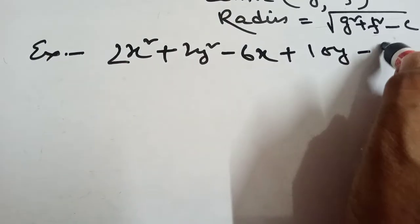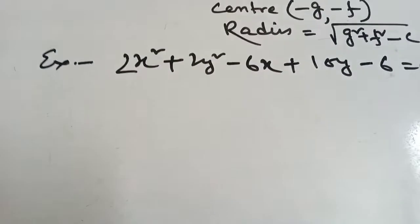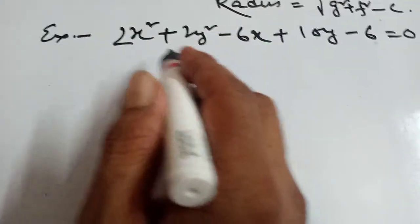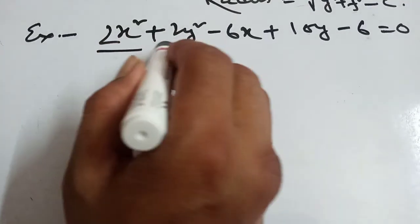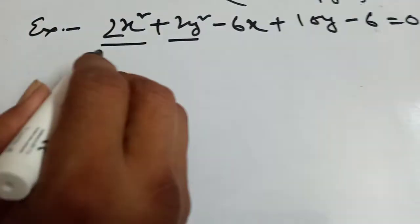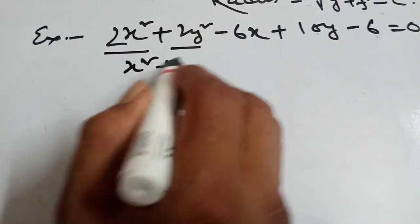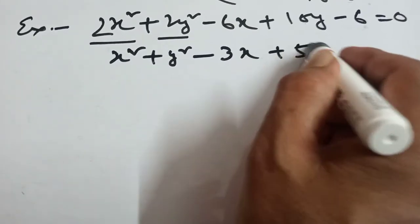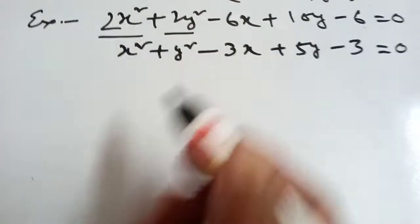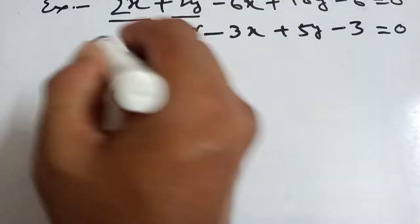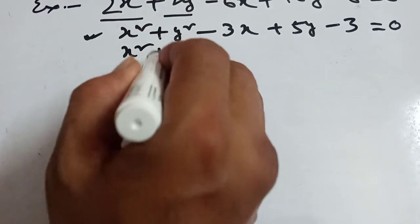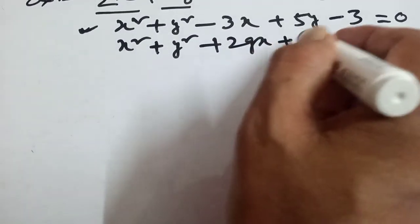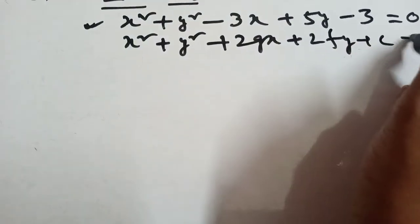This is the standard equation of a circle. Now, compare here — take 2 common from here, then it will be x² + y² − 3x + 5y − 3 = 0. Now compare this equation with the standard equation x² + y² + 2gx + 2fy + c = 0.